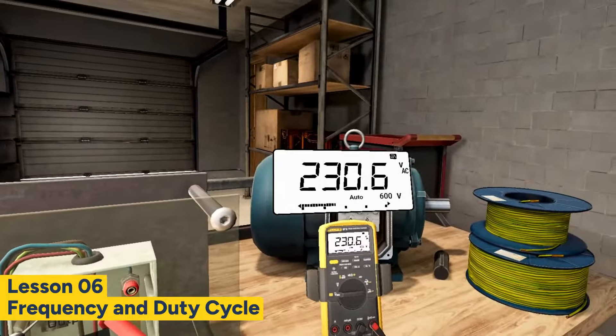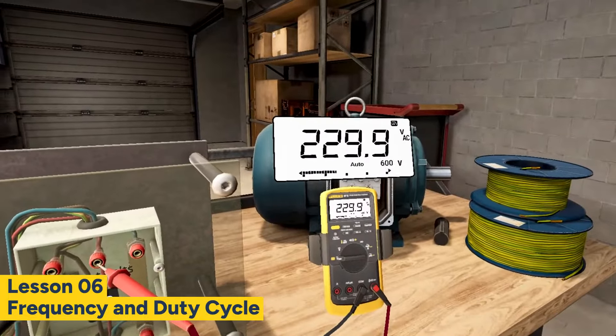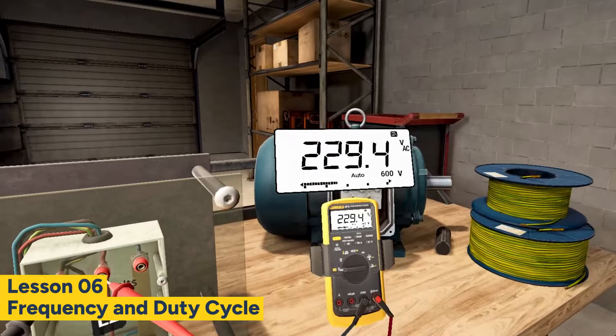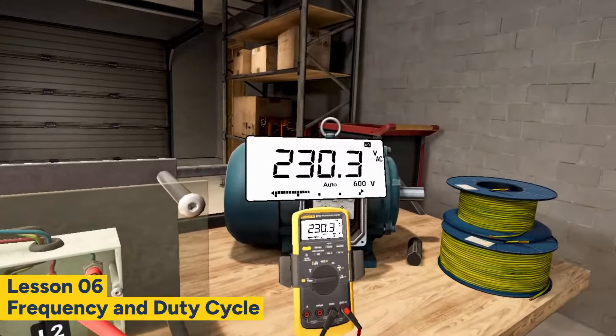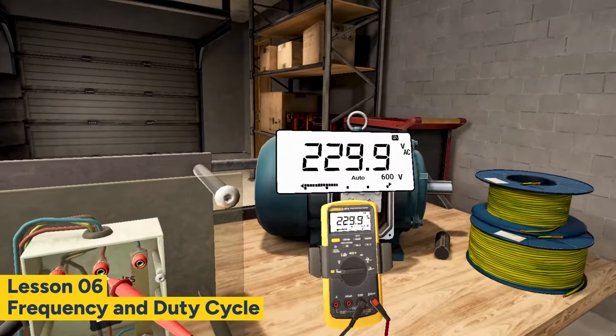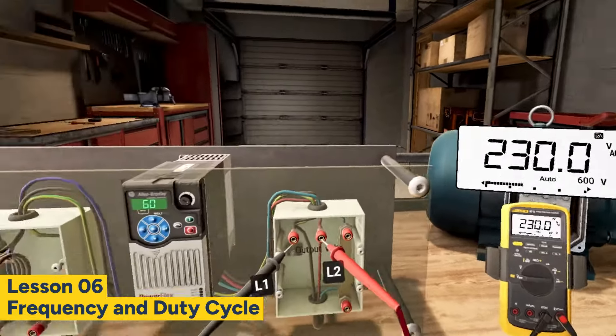For AC motors, any change in frequency causes a proportional change in motor speed. A 5% reduction in frequency yields a 5% reduction in motor speed. Now go ahead and adjust the frequency knob and set the frequency to about 30 hertz.